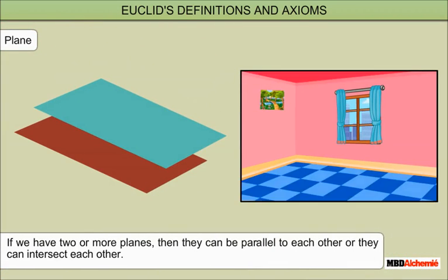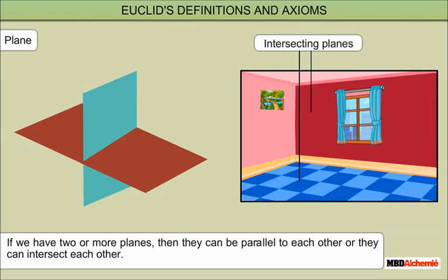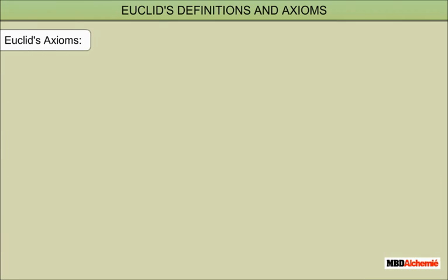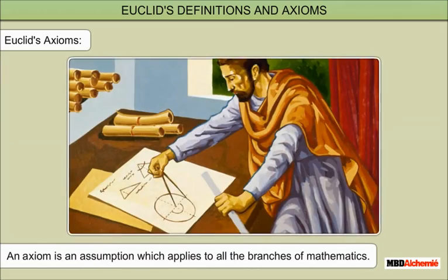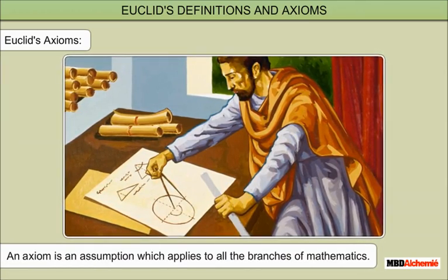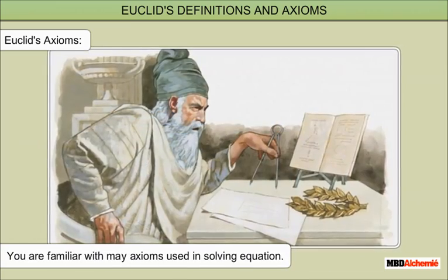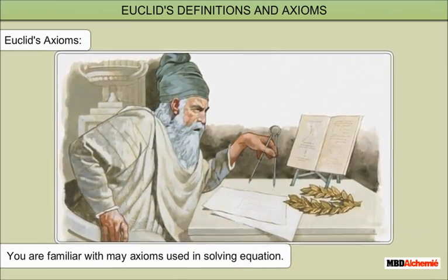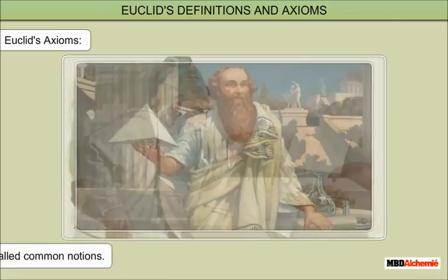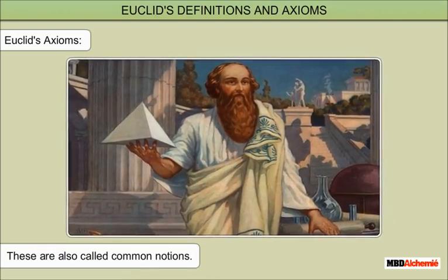If we have two or more planes, then they can be parallel to each other, or they can intersect each other. Euclid's Axioms: An axiom is an assumption which applies to all branches of mathematics. You are familiar with many axioms used in solving equations. These are also called common notions.